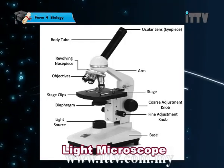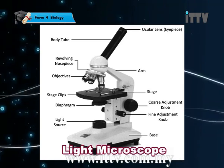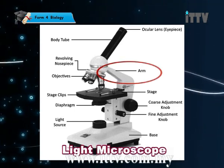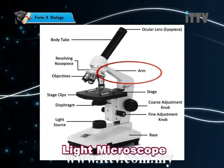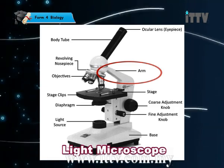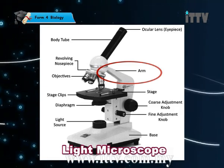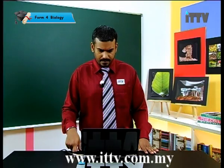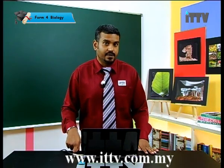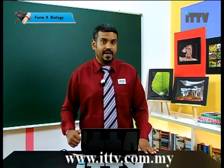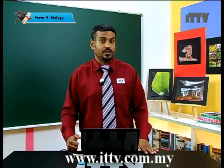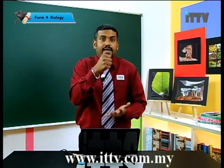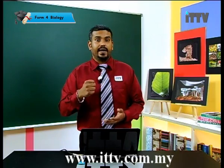A light microscope has a few structures that require your attention. First and foremost, look at the arm. The arm is a very important part for handling because you'll always have to hold the microscope on the arm. You've got to be very careful as the microscope is not cheap. Always place one hand on the arm and the other on the bottom to prevent it from falling and breaking.